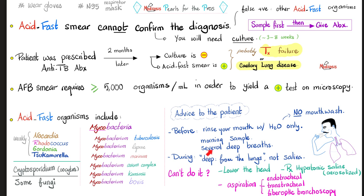Now get ready for the test. Take several deep breaths and give a deep cough from the lungs — not saliva. Tuberculosis is concentrated in your lungs, so the cough has to come from very deep. If the patient finds it hard, the doctor can lower the patient's head or give aerosolized hypertonic saline, which attracts water by osmosis, increases secretions, and makes it easier to expectorate.